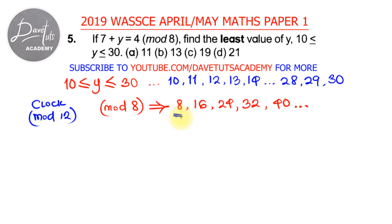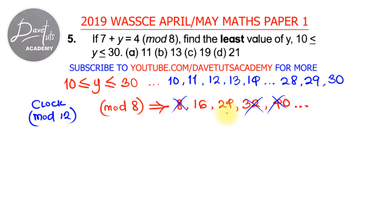Looking at the multiples: if y were 8 — but they say y should start from 10, so we cannot use 8. Also 32 and 40 are not within the range of 10 to 30. So we need to work with 16 and 24, as those are the multiples of 8 that fall within our range.